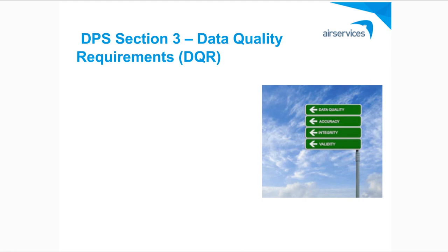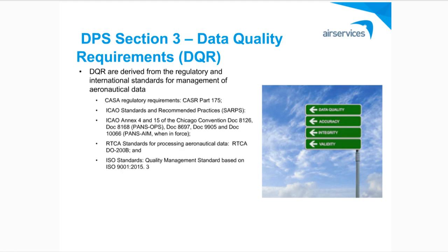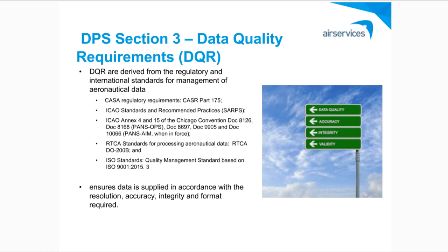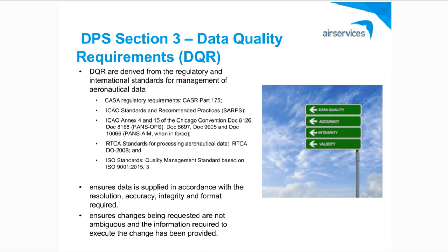DPS Section 3 outlines the data quality requirements for data elements and information we collect and publish. There are a number of regulatory requirements and international standards that we must follow in relation to managing aeronautical data. Quality aeronautical data is now so critical to ensure that the many systems across the aviation industry function correctly and talk to each other seamlessly without manual intervention. Data quality requirements also make sure that data originators and the AIS provider are on the same page in regard to what data they own and how they're going to give it to us — whether it be a geographical coordinate for a runway threshold, the code for pavement strength, or just identifying if information is text. In short, data quality requirements help avoid confusion.